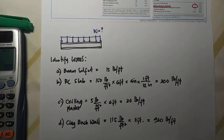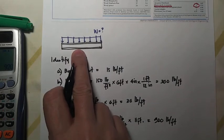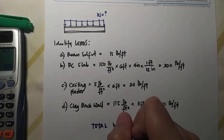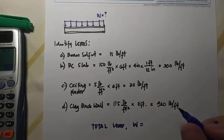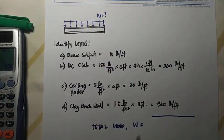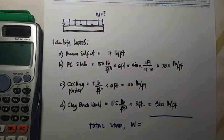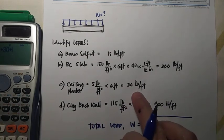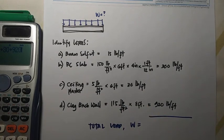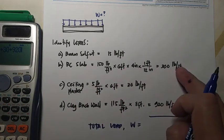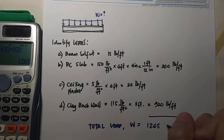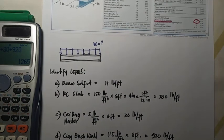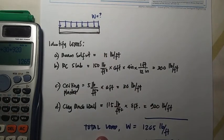I think this is all the loads for the beam. So therefore what would be the total load? The total load, I call it as W, would be the summation of all these loads. So we have 15 from the self-weight of the beam plus 300 coming from the RC slab plus 30 from the plastering on the ceiling, and we have 920 coming from the clay brick wall. So 15, 300, 30, and 920, so the total is 1265 pounds per foot. So that is the total uniform load for this problem. Thank you.